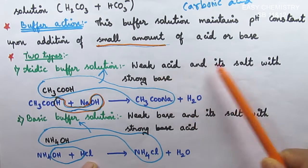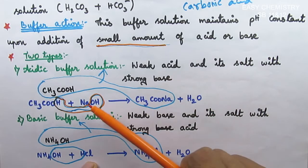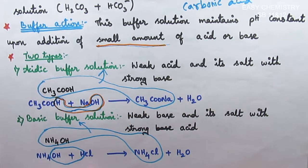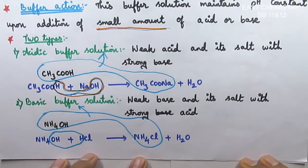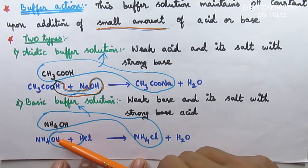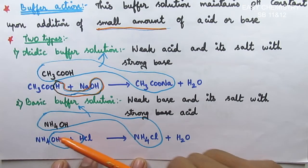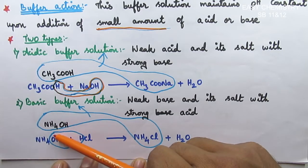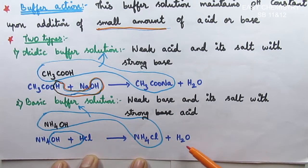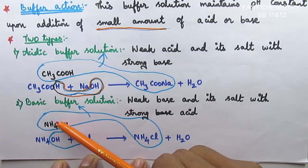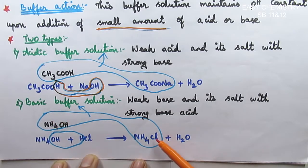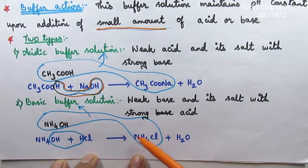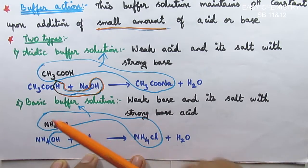Acidic buffer is a weak acid and its salt with strong base. For basic buffer, it is a weak base — such as ammonia — that reacts with a strong acid like hydrochloric acid. If you add OH minus and H plus, you get water. The remaining product is salt — ammonium chloride. So, the mixture of ammonia and ammonium chloride is called basic buffer solution.